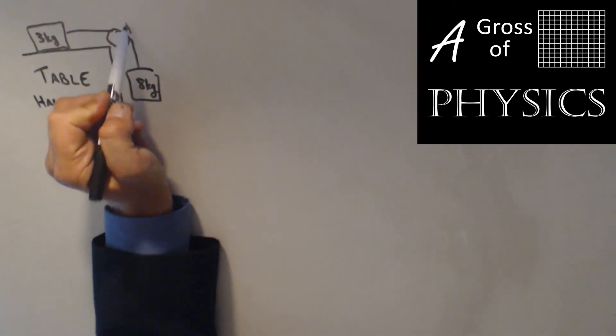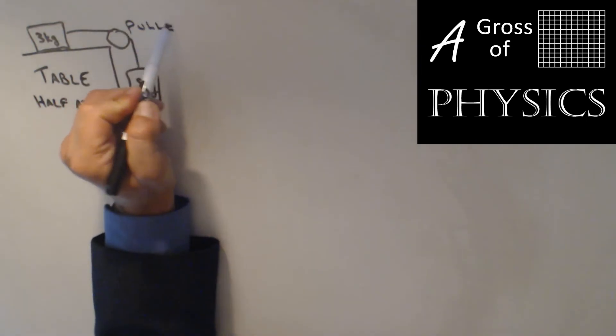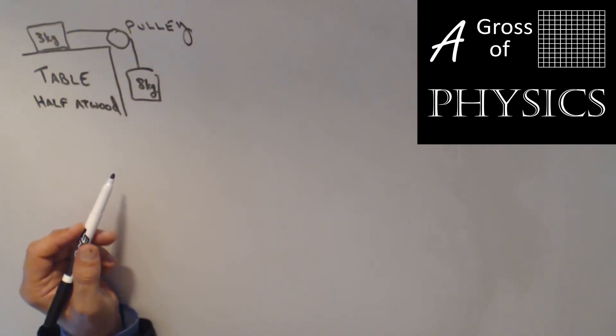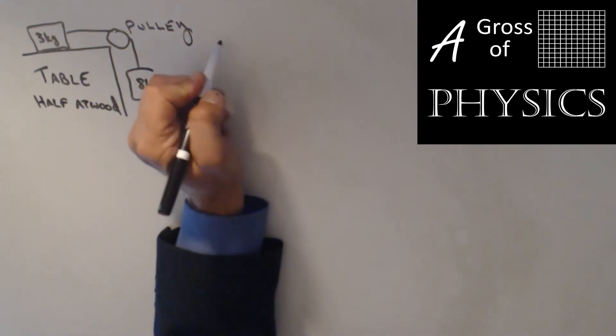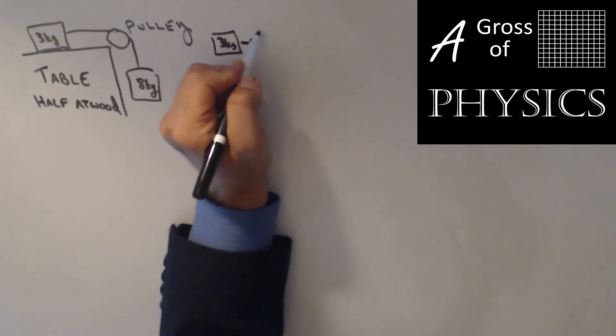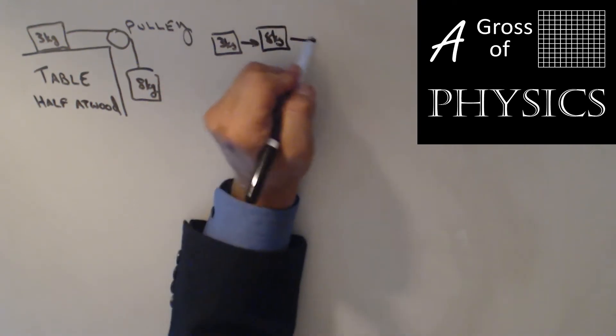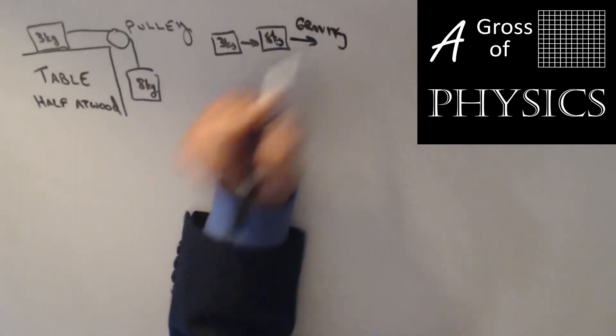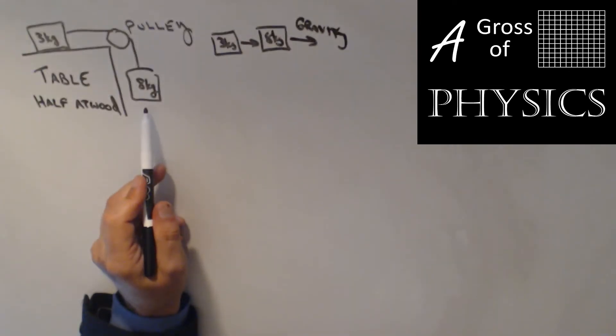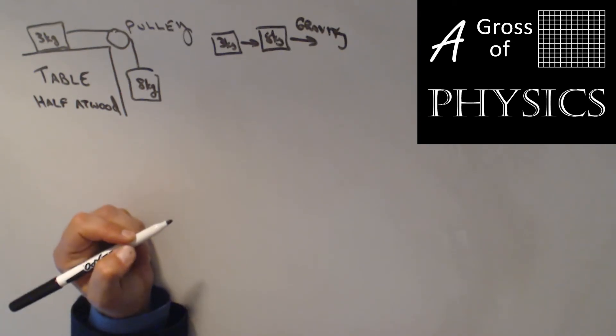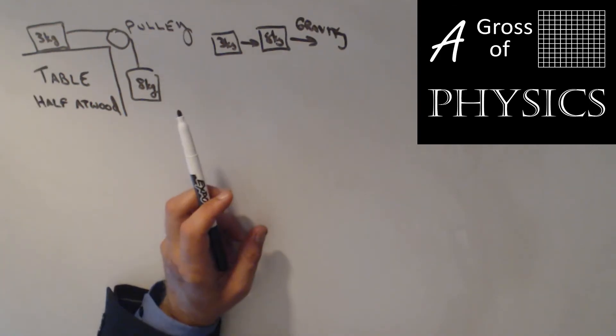The problem is we now have a pulley involved. A pulley's job is to change the direction of force. This is no different than having the 3 kg mass pulled sideways by the 8 kg block which is being pulled by gravity. The pulley is translating the force 90 degrees. We're able to use the downward force of gravity because it's consistent. Since we have uniform acceleration, it allows us to study the acceleration truly of the 3 kg block.